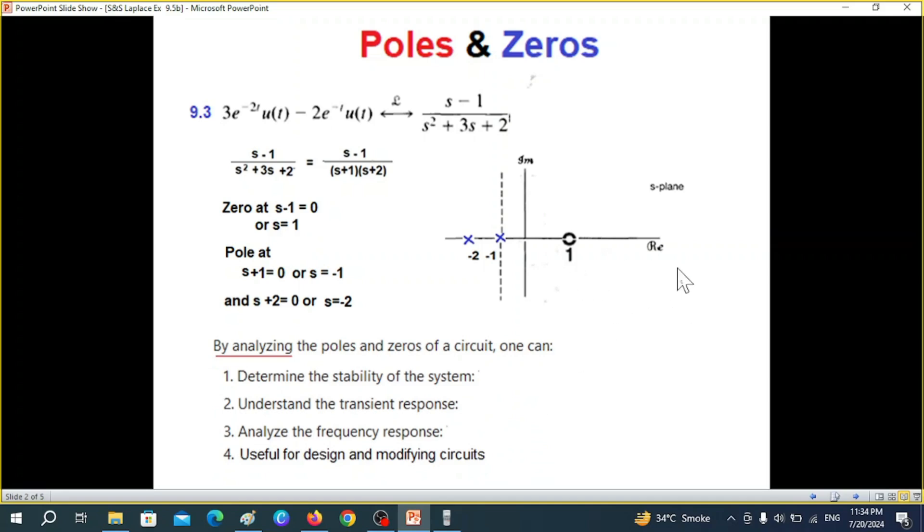Why we study this? Briefly, by analyzing the poles and zeros of a circuit one can determine the stability of the system. So that is very important. Knowing the location we can say that the system is stable or unstable.